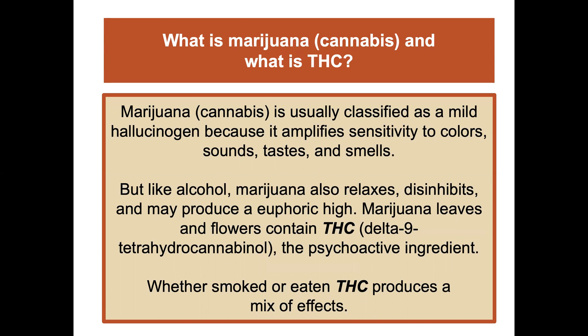Marijuana, or cannabis, is usually classified as a mild hallucinogen because it amplifies sensitivity to colors, sounds, tastes, and smells. But like alcohol, marijuana also relaxes, disinhibits, and may produce a euphoric high. Marijuana leaves and flowers contain THC, the psychoactive ingredient. Whether smoked or eaten, THC produces a mix of effects — here's a good overview of the psychoactive drugs.